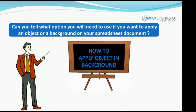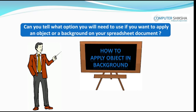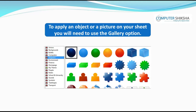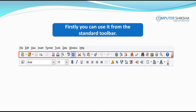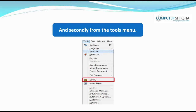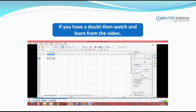Can you tell what option you will need to use if you want to apply an object or a background on your spreadsheet document? To apply an object or a picture on your sheet, you will need to use the Gallery option. You can use the Gallery option from two places: from the standard toolbar, and from the Tools menu. Show how you can use the Gallery option to insert some pictures on a different sheet. If you have a doubt, watch and learn from the video.